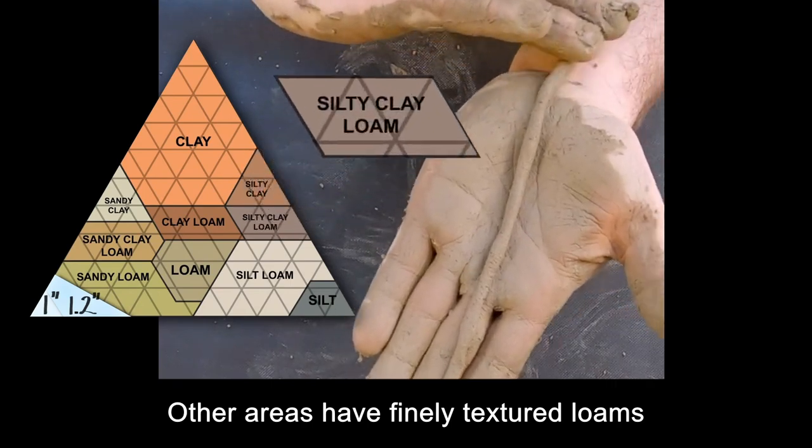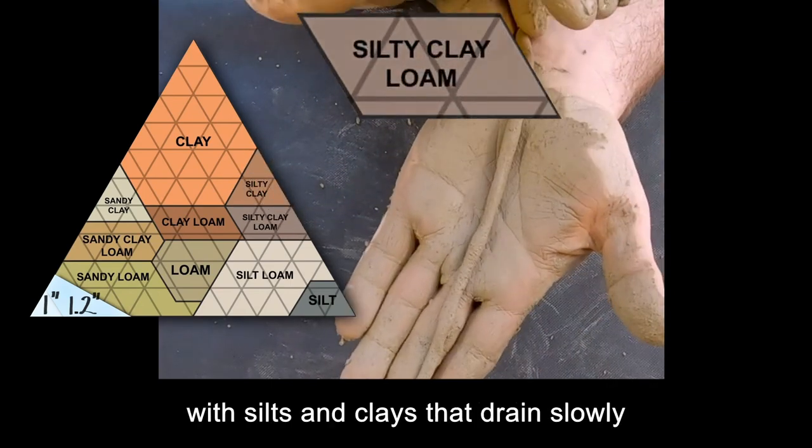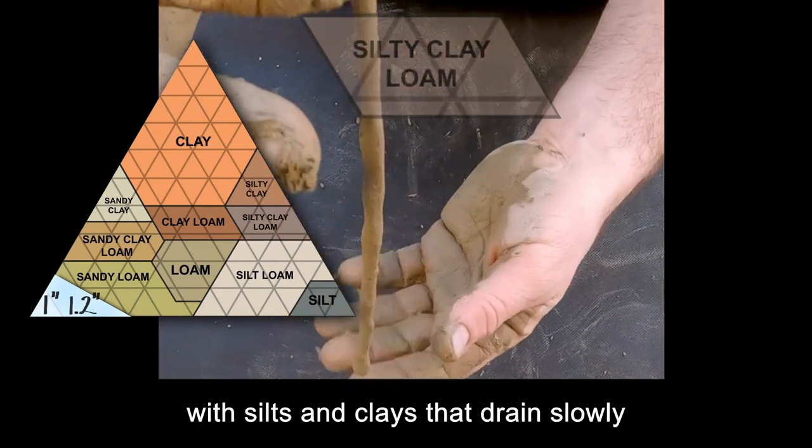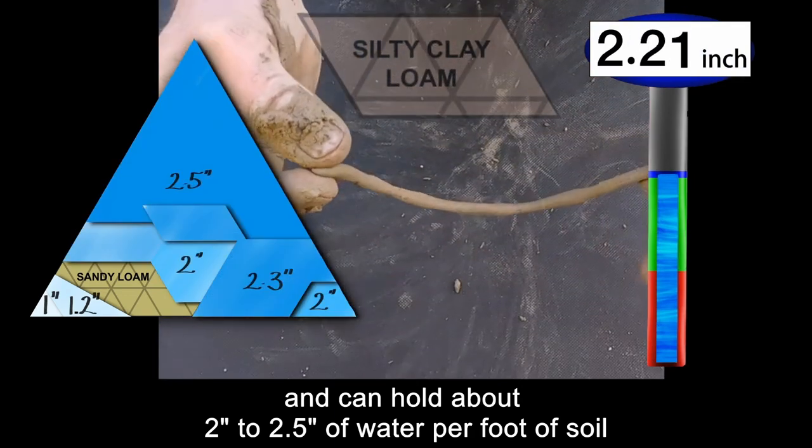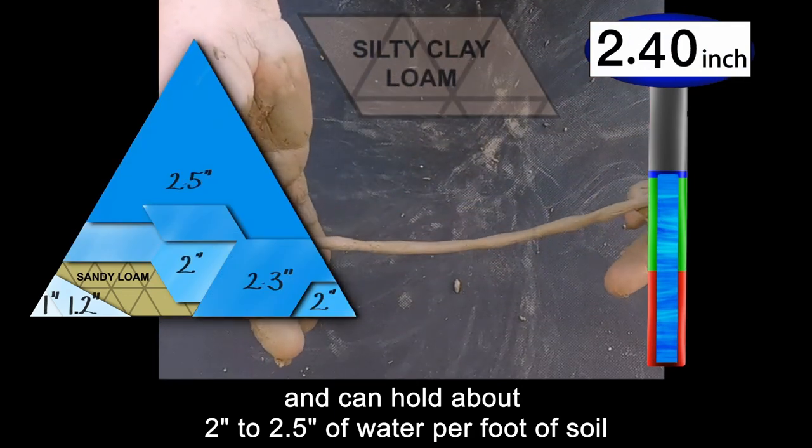Other areas have finely textured loams with silts and clays that drain slowly and can hold about 2 to 2 and a half inches of water per foot of soil.